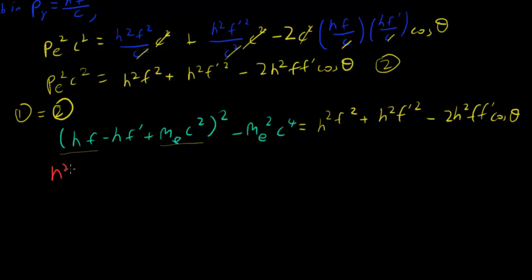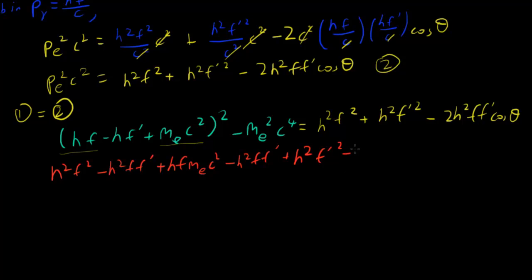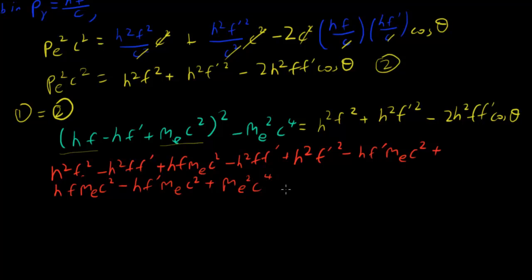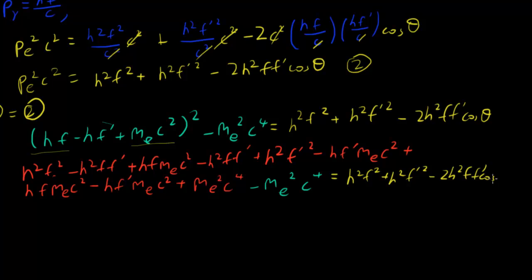Let's expand it — I'm just gonna write it down. Hopefully my math is right. So we have hf' · mₑc² plus, bringing it over. We have hf' · mₑc² plus mₑ²c⁴ minus mₑ²c⁴ equals h²f² plus h²f'² minus 2h²ff' cos θ.